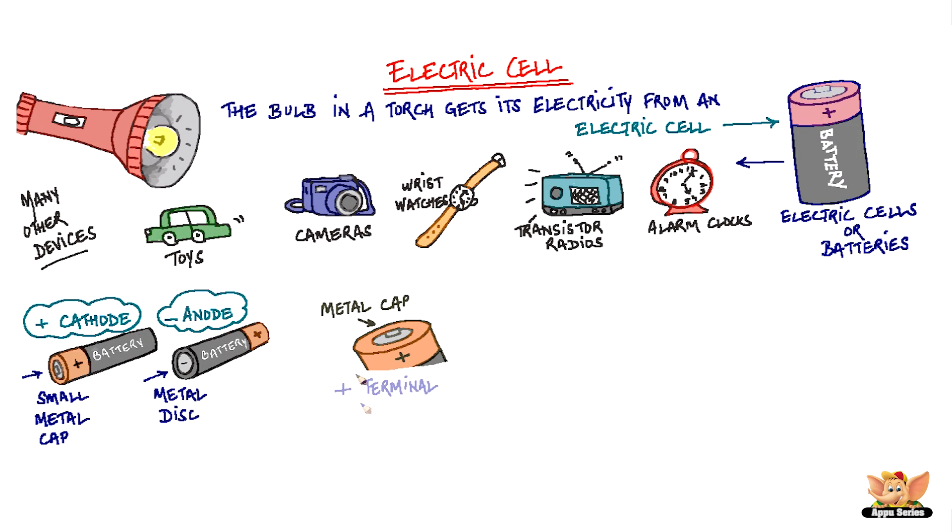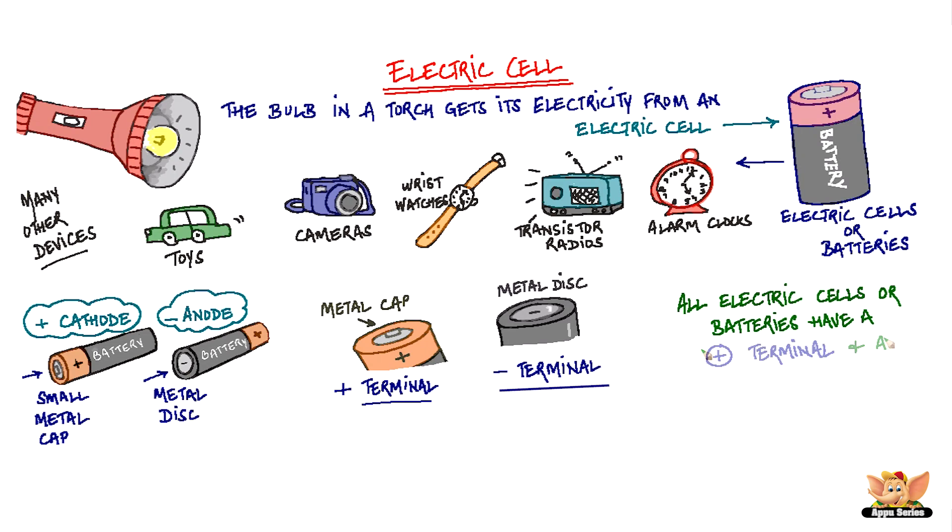The metal cap is the positive terminal of the electric cell and the metal disc is the negative terminal. All electric cells or batteries have a positive terminal and a negative terminal.